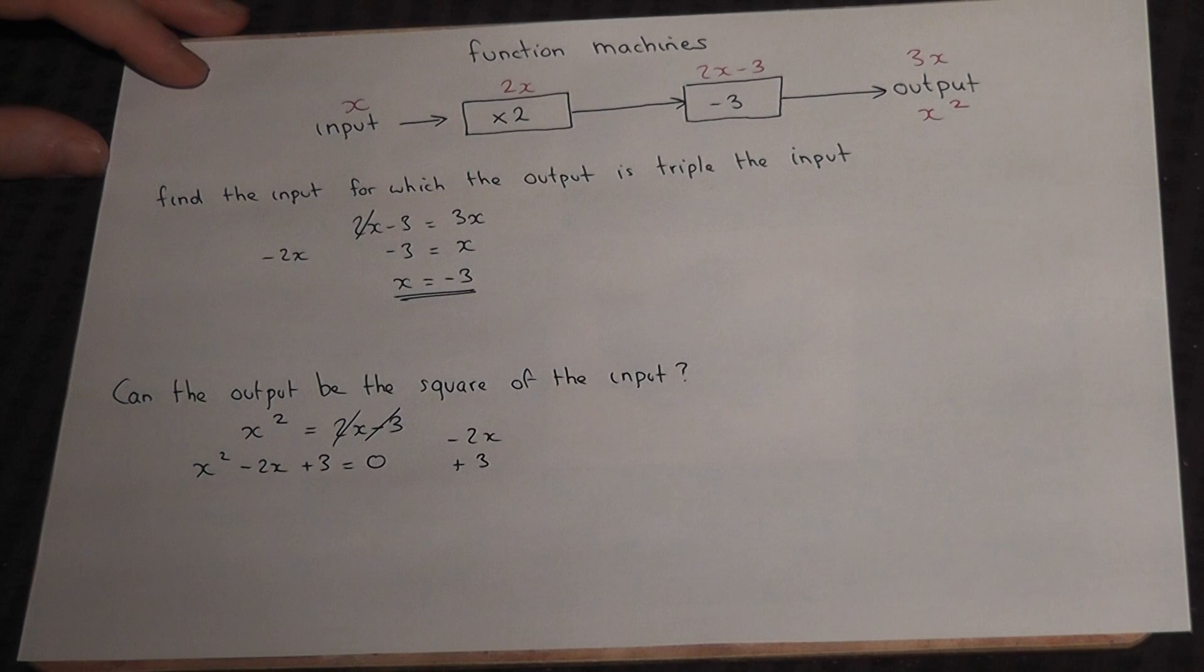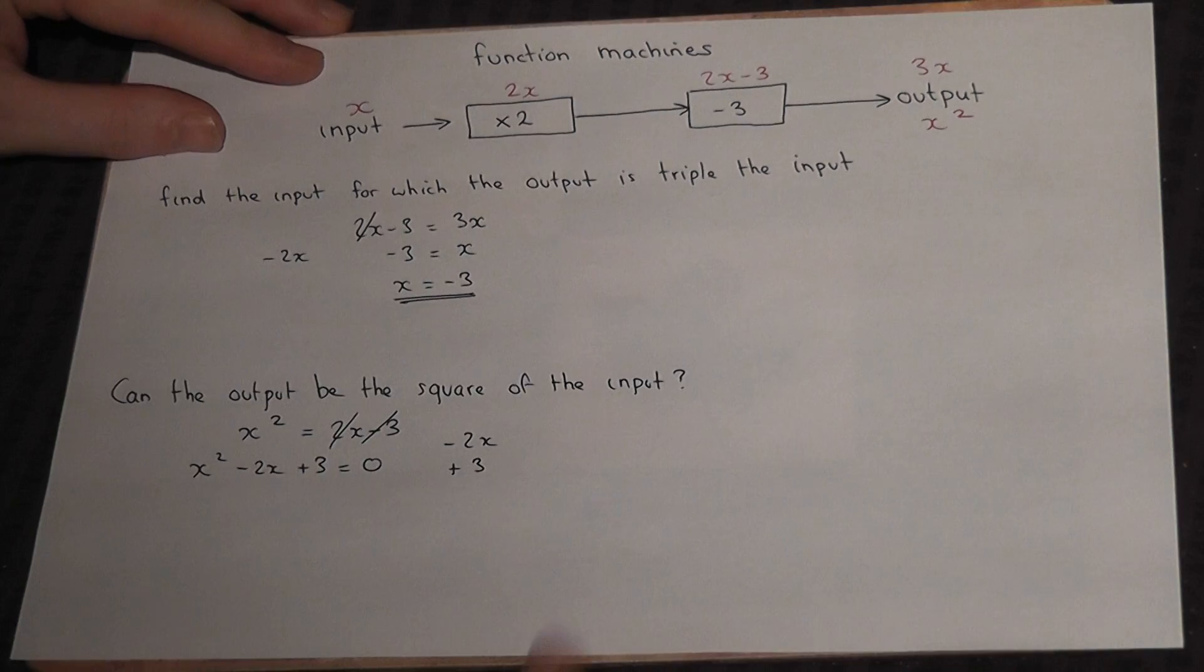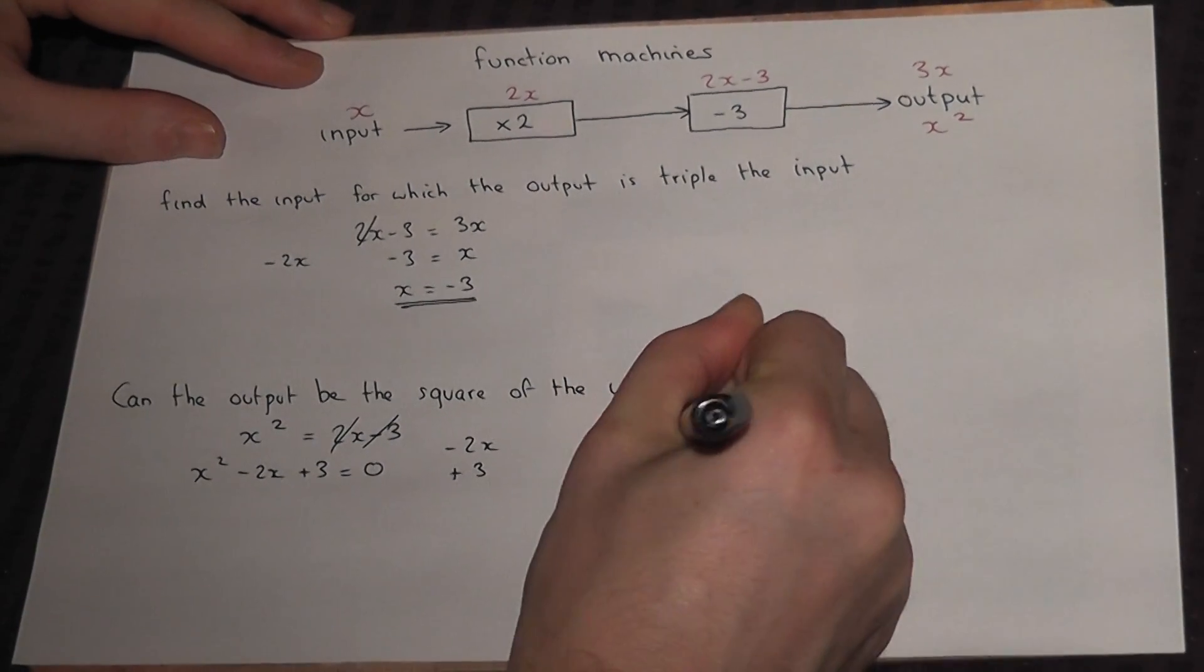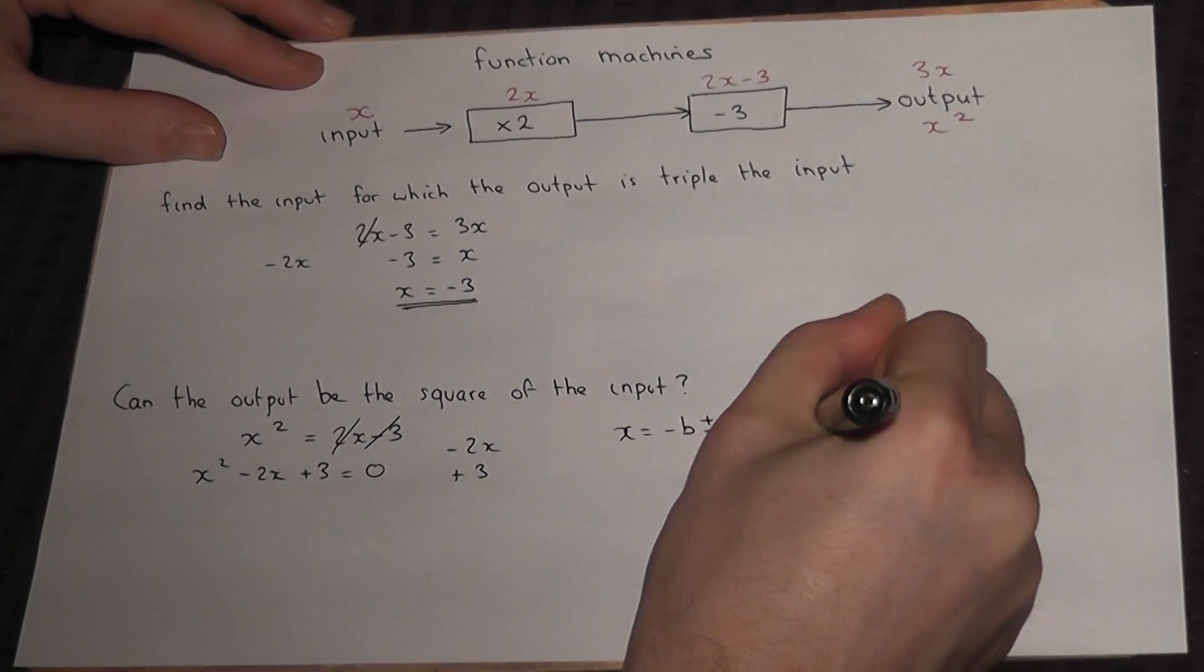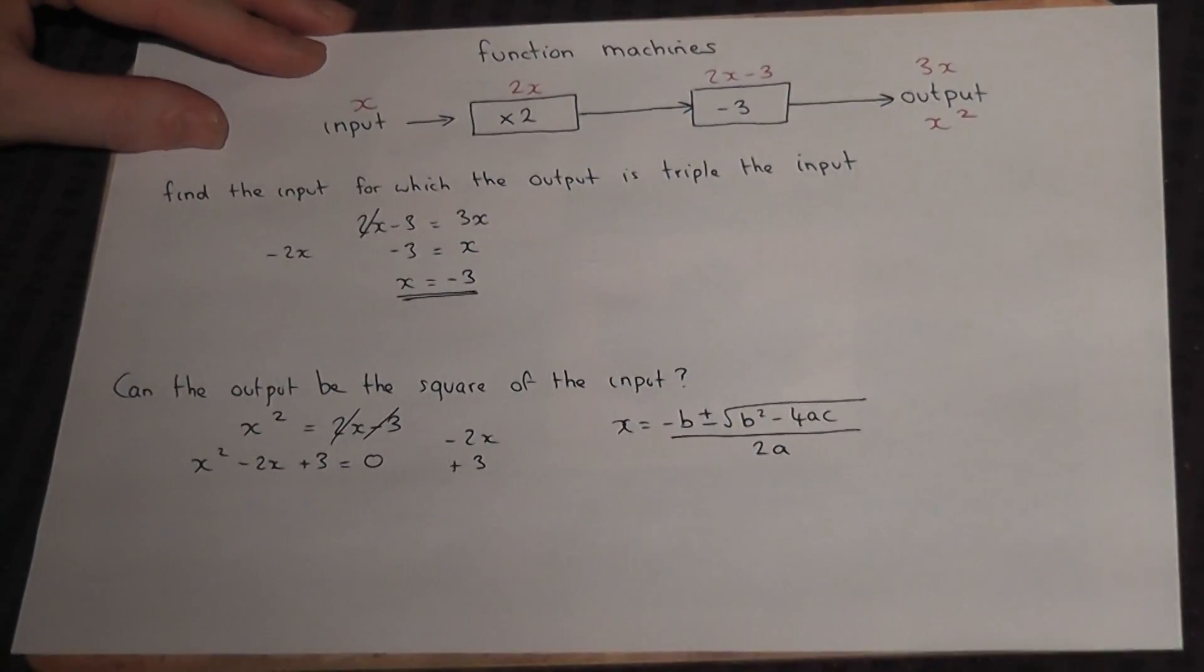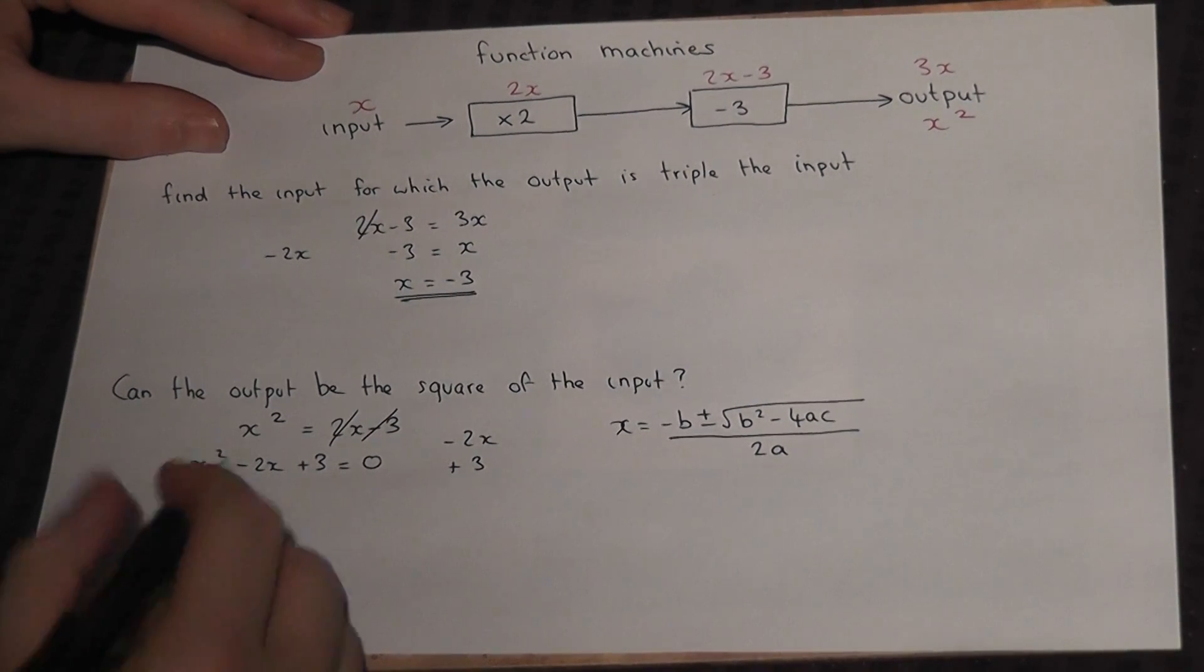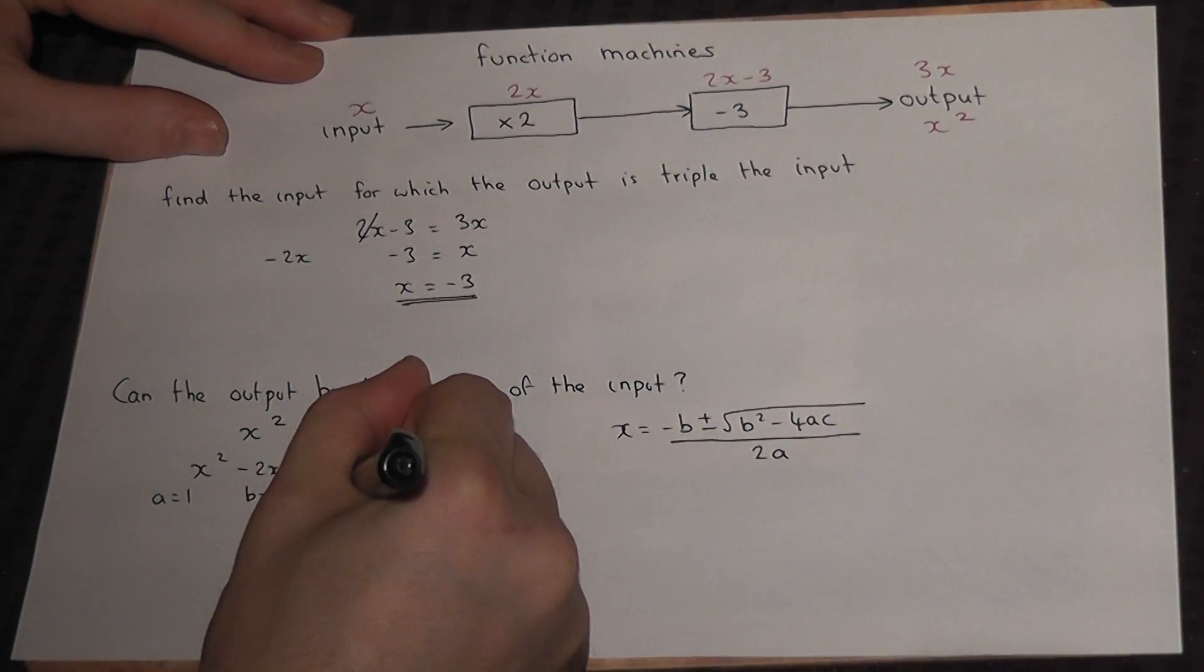Now this doesn't factorize, so I'd have to use a formula to solve it, which is x equals minus b plus or minus the square root of b squared minus 4ac all over 2 lots of a. In this case, a is 1, b is minus 2, and c is 3.